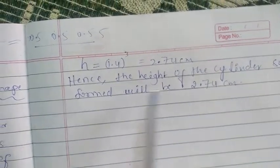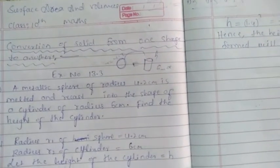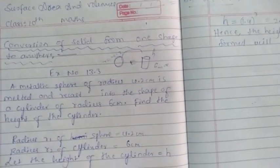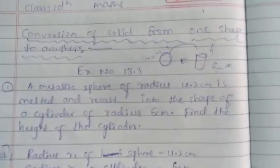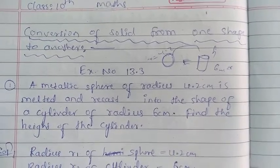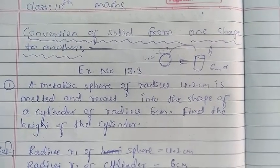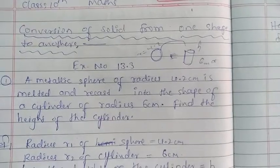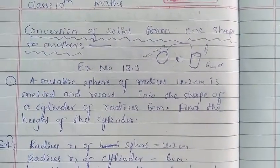Like that, you find the unknown values. All examples in Exercise 13.3 are based on the conversion of solids from one shape to another. I hope you understood. In the next class we will see the remaining examples. Thank you for watching, have a nice day.